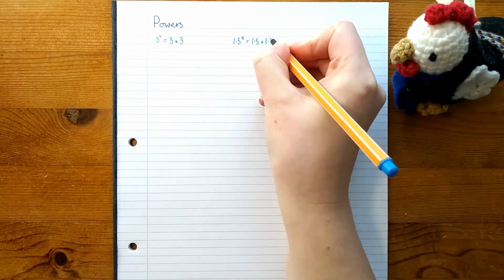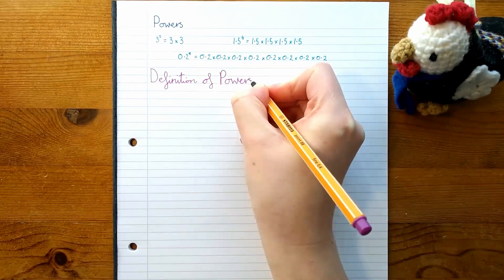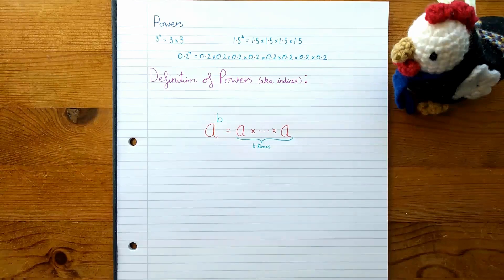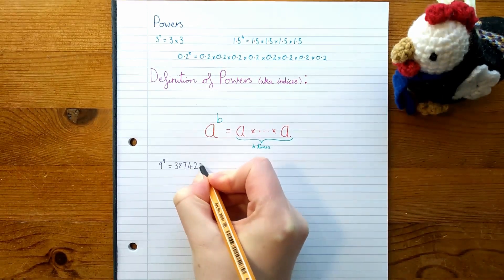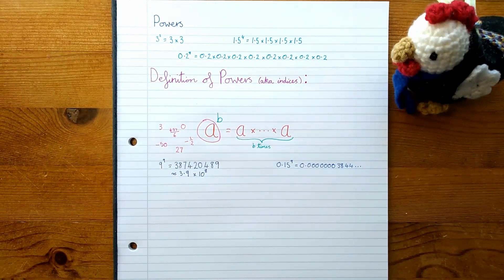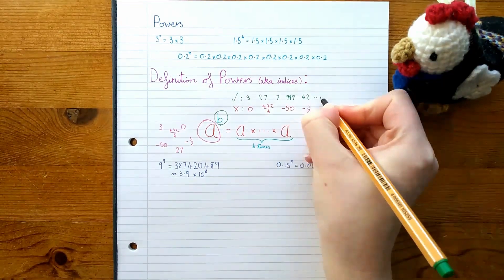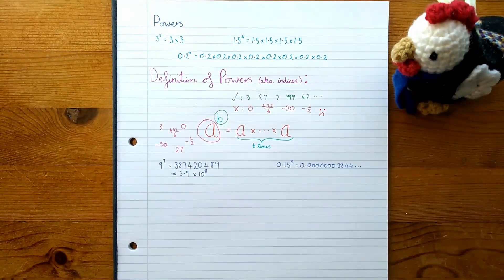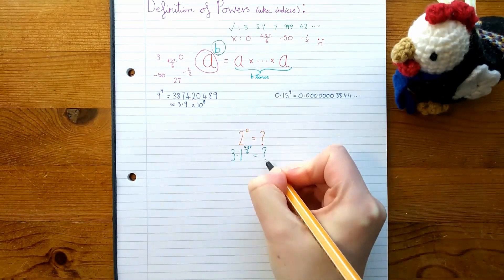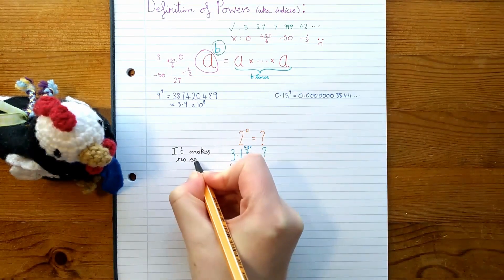Powers — multiplying a number by itself lots of times. It's an easy way to make really big numbers, and really small numbers too. We can even use it as a shorthand to write large numbers down without bothering about all of the digits. But there's something strange going on here: we're told we can put any number we want on the bottom, but we're only allowed to put a whole number on the top, because we can only multiply something by itself a whole number of times. This seems a bit unfair to all of the other numbers — they're perfectly good numbers, but they're not allowed to go in the power.